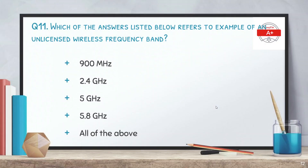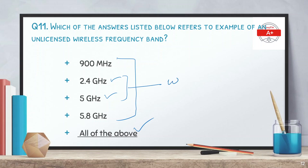Question 11: Which of the answers listed below refers to examples of an unlicensed wireless technology band? The options are: 900 MHz, 2.4 GHz, 5 GHz, 5.8 GHz, or all of the above. The correct answer is all of the above — these bands are all unlicensed and anyone can use them, for example at home via a wireless access point.